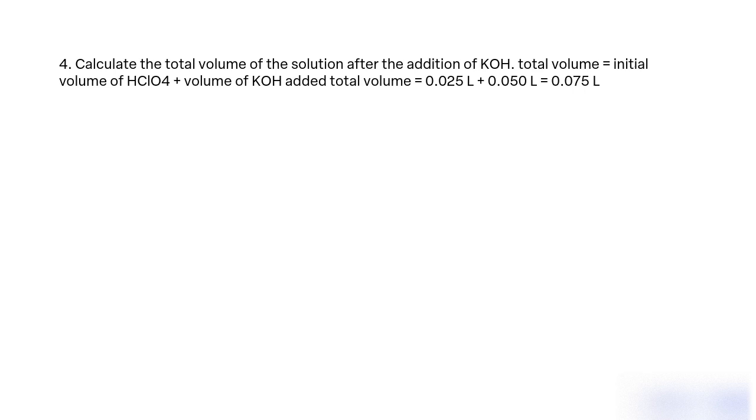Calculate the total volume of the solution after the addition of KOH. Total volume equals initial volume of HClO4 plus volume of KOH added. Total volume equals 0.025 L plus 0.050 L equals 0.075 L.